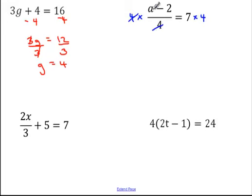That cancels out the denominator, so I'm left with a minus 2 equals 7 times 4, which is 28. Then I just add 2 to both sides to give me a equals 30.